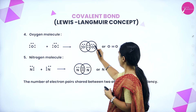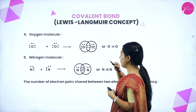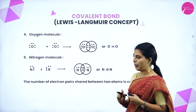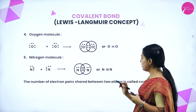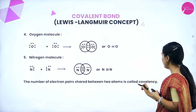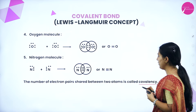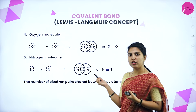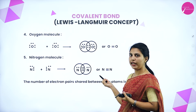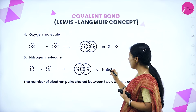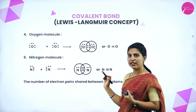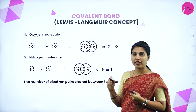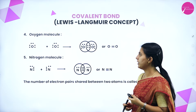Oxygen forms a double bond with two electron pairs. Nitrogen forms a triple bond with three electron pairs. The number of electron pairs shared between two atoms is called covalency. For example, the covalency of N₂ molecule is 3 because there are three bonds between the atoms. The covalency of oxygen is 2.